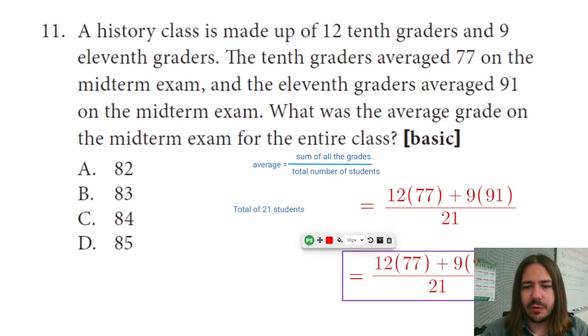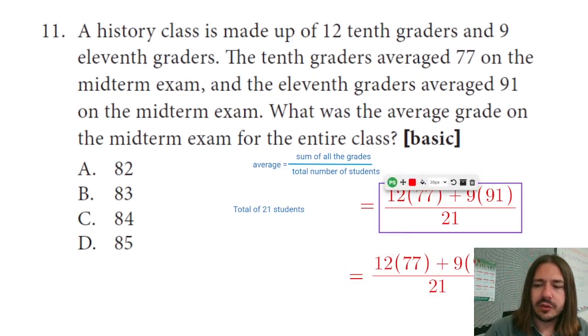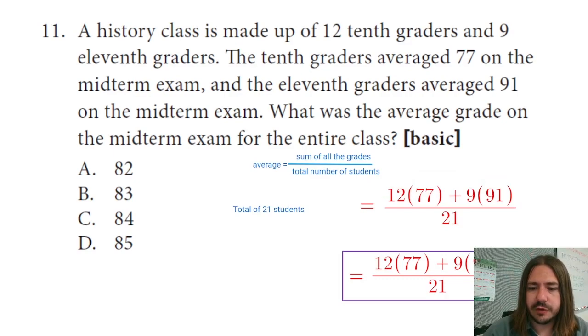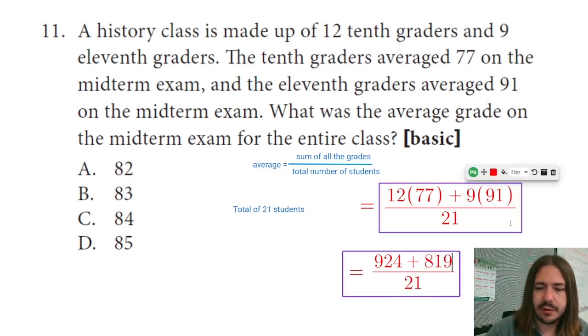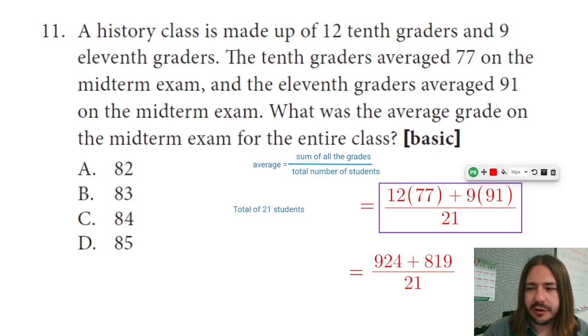Let's break this down one step at a time, though. 12 times 77 is going to be 924. And then 9 times 91 is going to be 819. If I add those two together, I get 1,743.